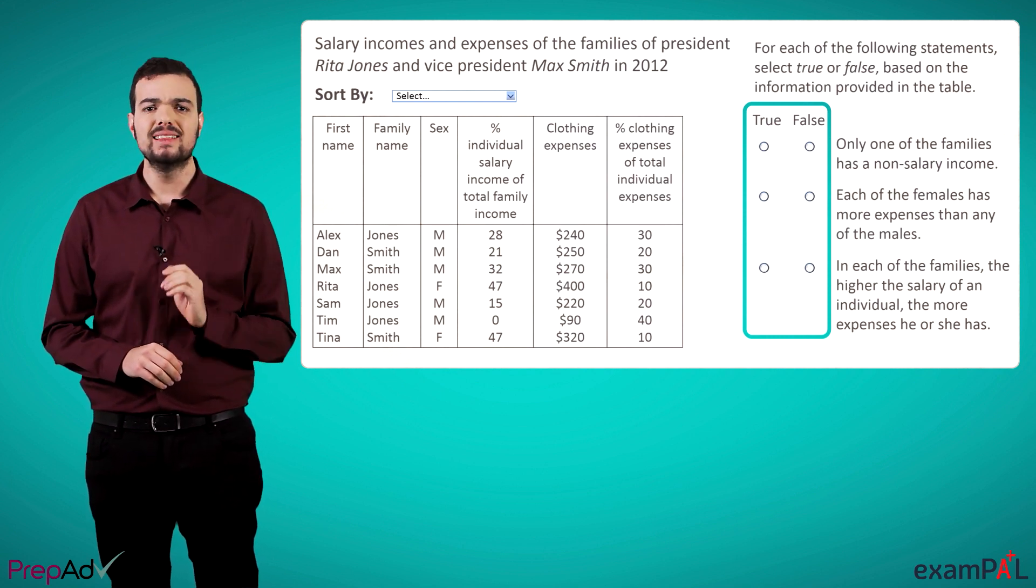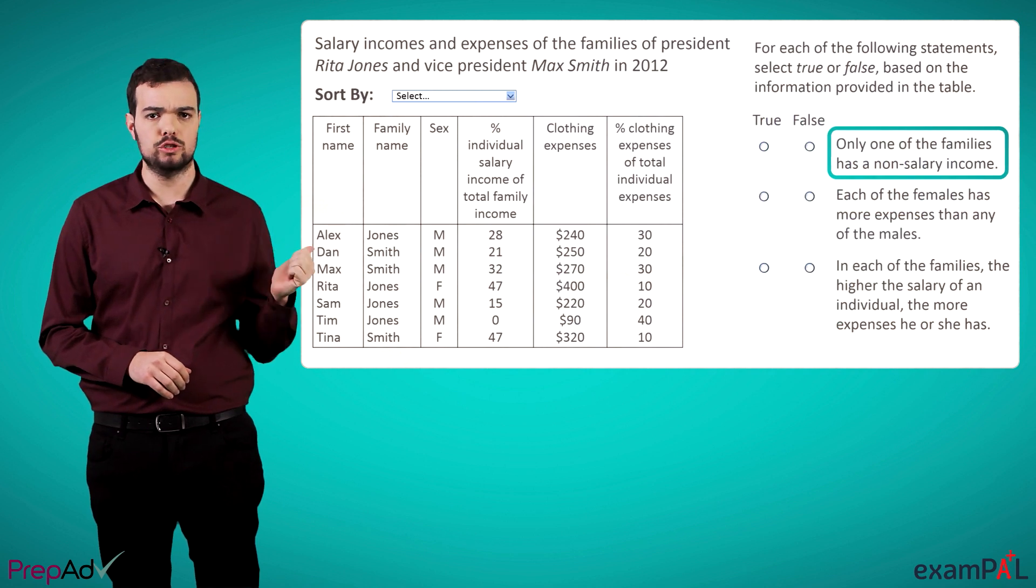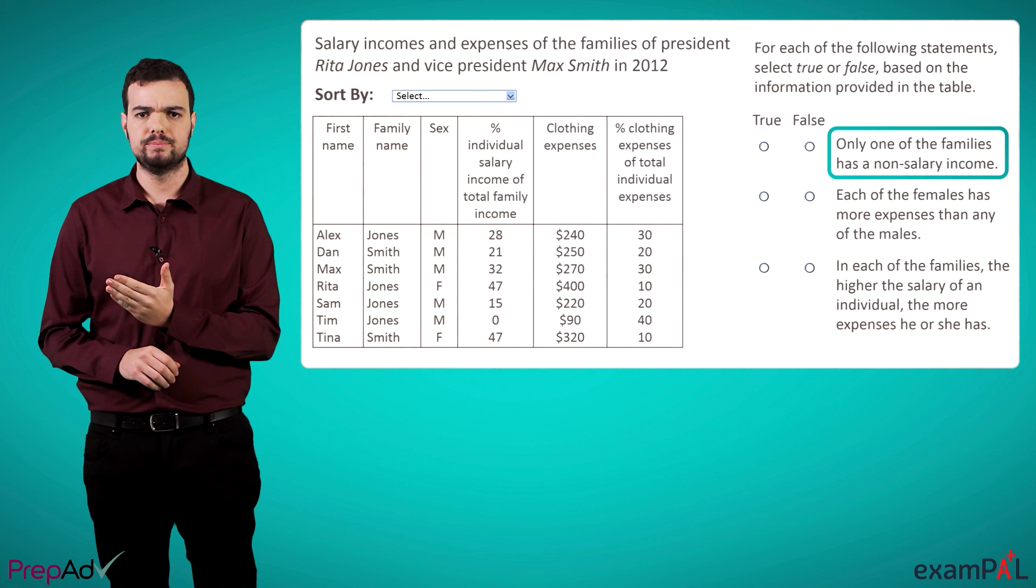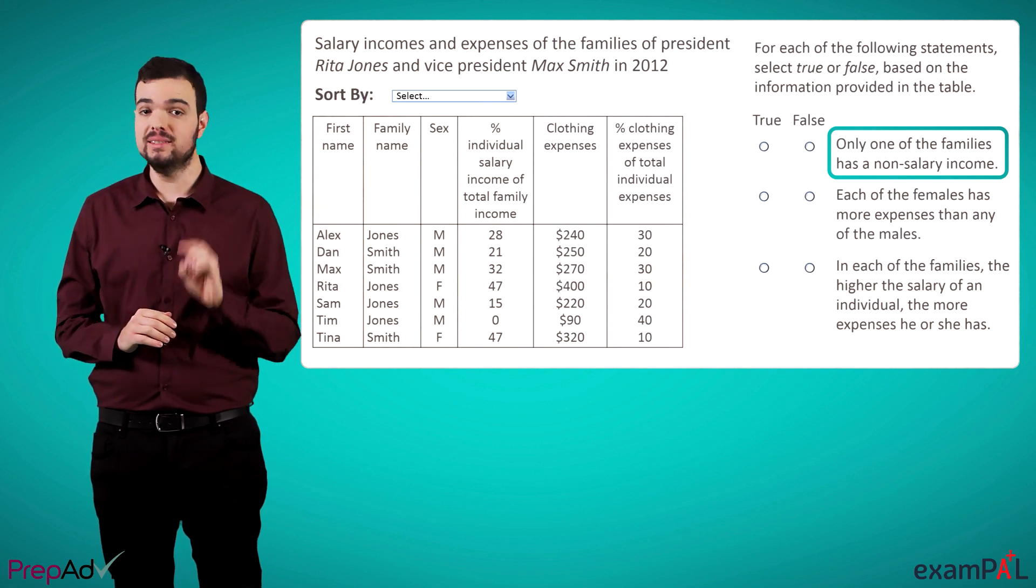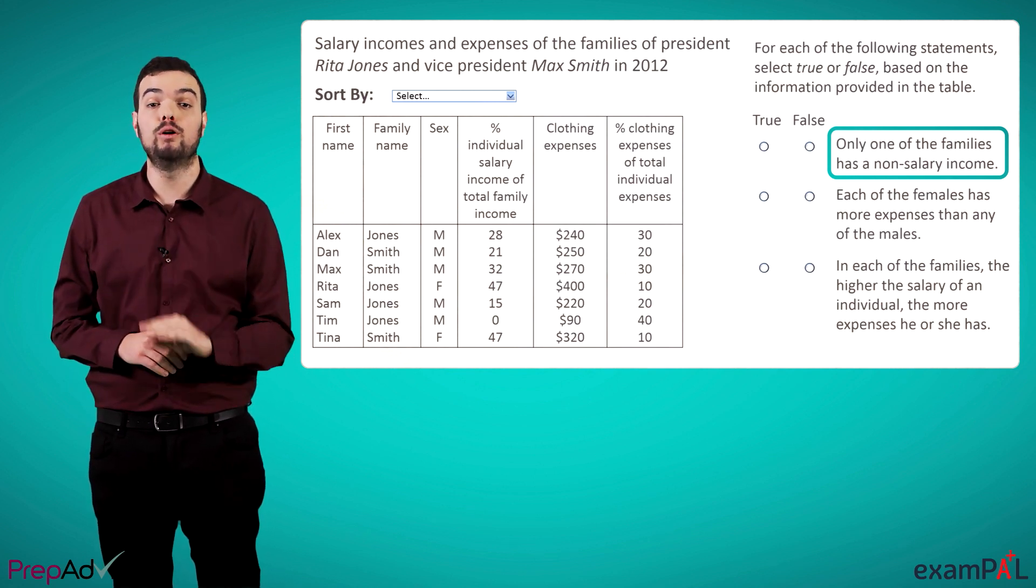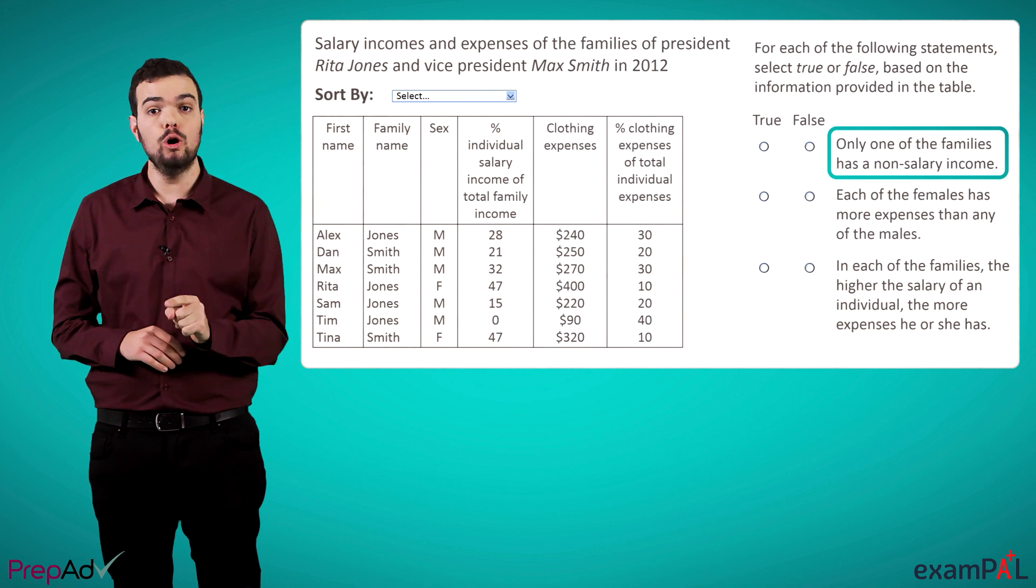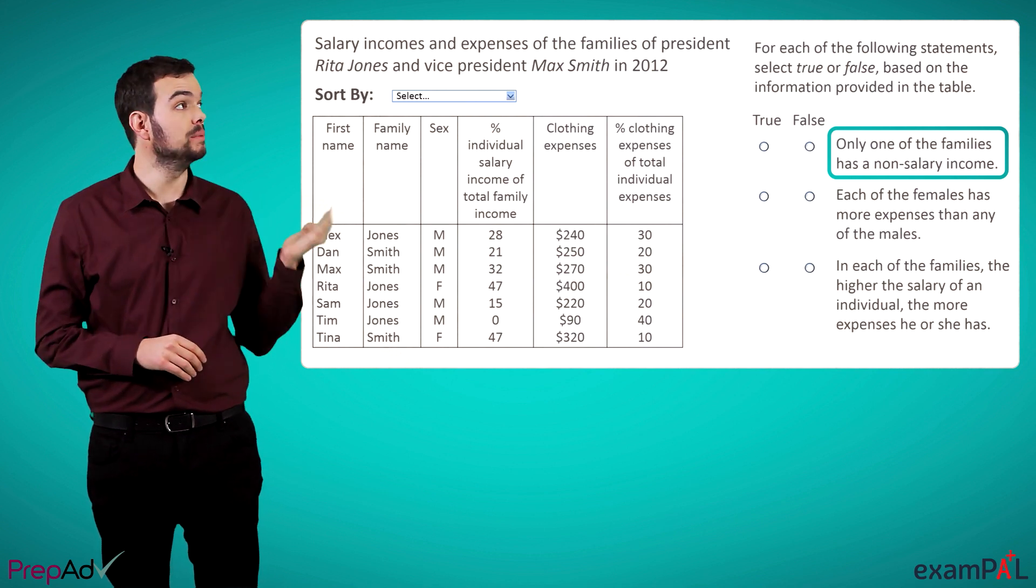To give an example, let's look at the first statement in this question. Only one of the families has a non-salary income. Now, it's clear from this statement that we're going to have to compare both families, so we should sort by family name.